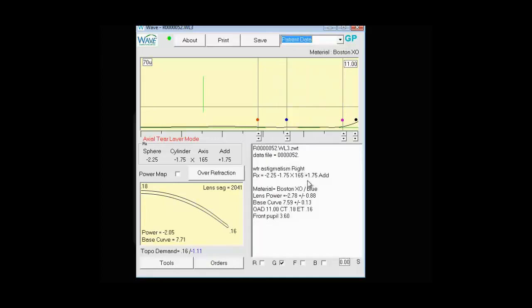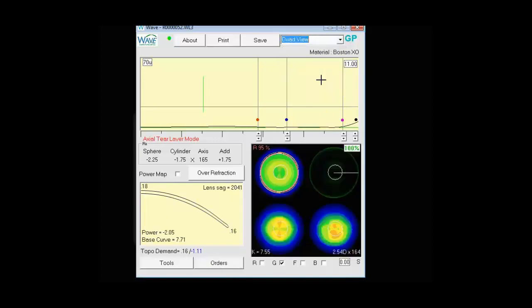Patient data is a good reference. It tells you the file name, the Rx that's in there. If you had any over-refractions in there, it would tell you that as well. And it gives you some basic information about the contact lens as well. For most design purposes, you'll be using quad view.